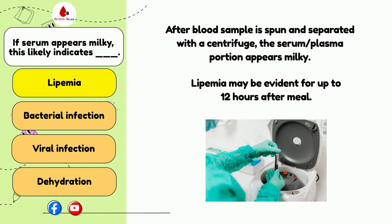Regarding bacterial infections — we cannot really tell what caused the infection, but we can tell if the patient has an infection because of a thick buffy coat. The buffy coat is the white layer between the red blood cells and the serum or plasma layer. An increase in white blood cells is an indication of an infection somewhere in the body, which leads to a thicker buffy coat. These infections could be bacterial or viral.